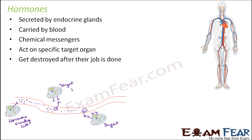An important point about hormones is that they generally get destroyed after their job is done. Once a hormone reaches its target cell and performs its job, it gets destroyed — it doesn't live for a long time. Once the job is done, it gets destroyed on its own, and new hormones get produced by the endocrine glands.